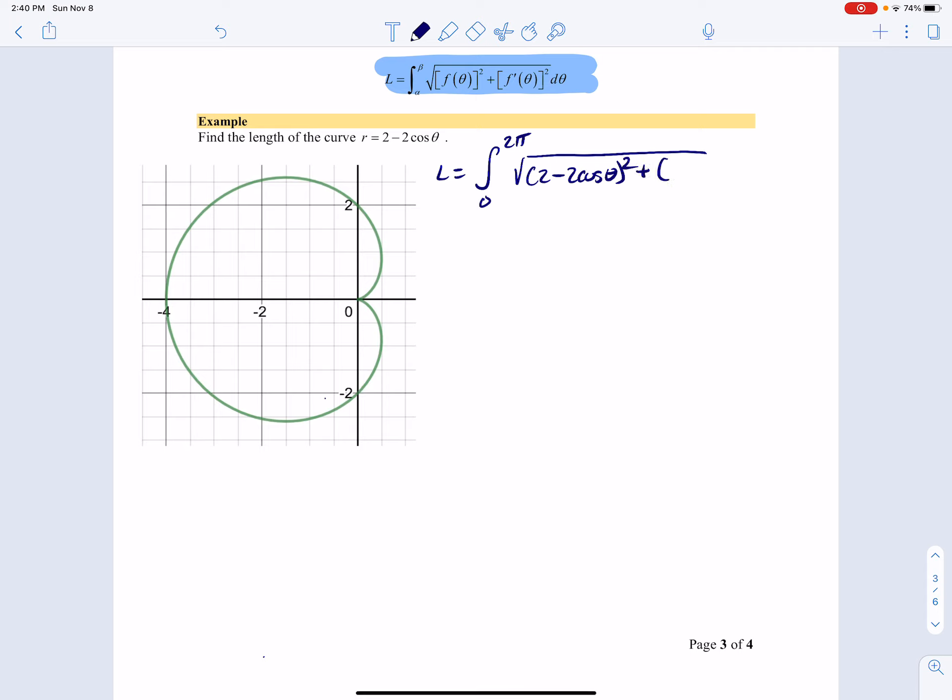Now, the derivative of 2 minus 2 cosine theta is 2 sine theta. And then we just go from here.